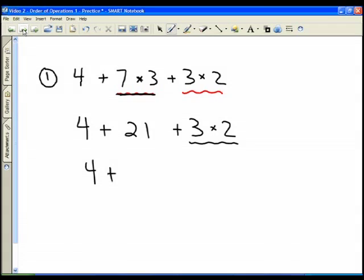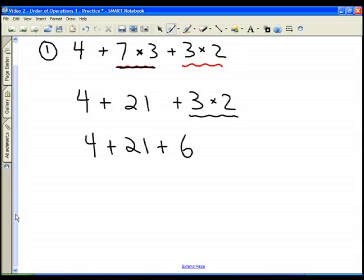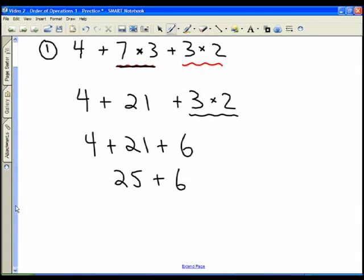Now I have a multiplication here that I have to deal with. I'm going to do that in my next line. That gives me 4 plus 21 plus, and 3 times 2 is 6. Now I've got only additions left, and the additions and subtractions go together. 4 plus 21 is 25 plus 6, and 25 plus 6 is 31.